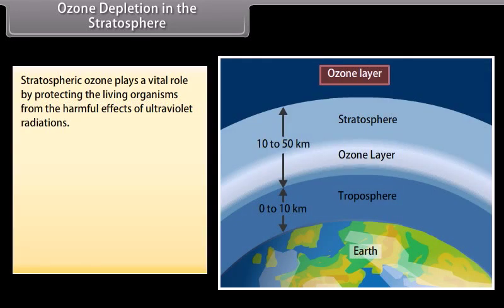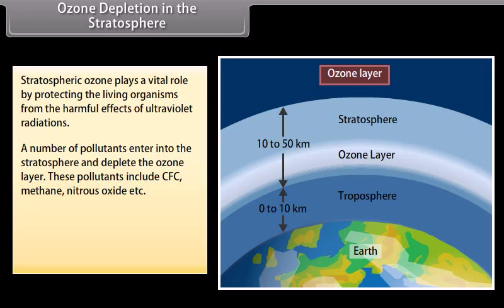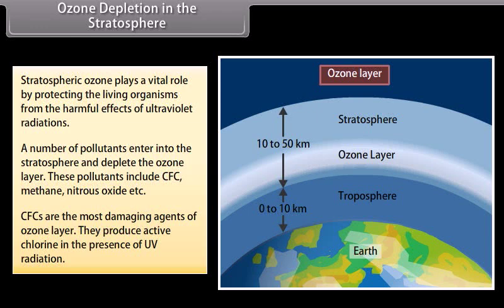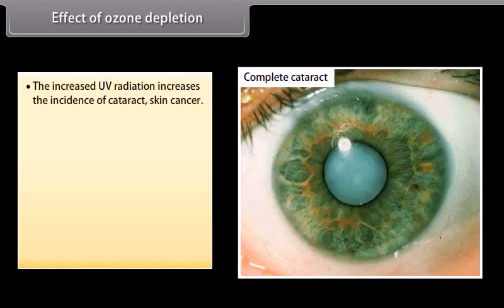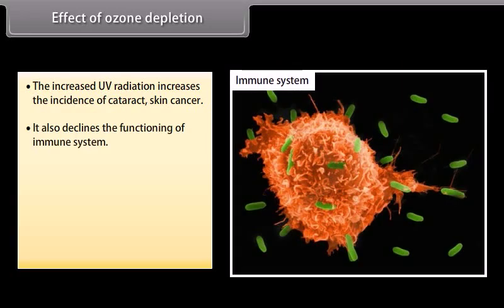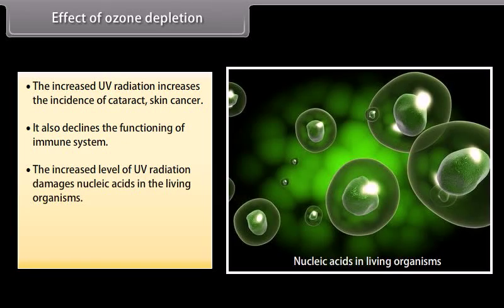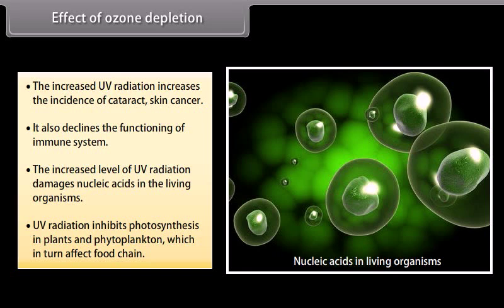Ozone Depletion: stratospheric ozone plays a vital role in protecting living organisms from the harmful effects of ultraviolet radiation. Pollutants such as CFCs, methane, and nitrous oxide enter the stratosphere and deplete the ozone layer. CFCs are the most damaging agents of the ozone layer — they produce active chlorine in the presence of UV radiation. Effects of ozone depletion include increased incidence of cataract and skin cancer, declined immune system functioning, damaged nucleic acids in living organisms, and inhibited photosynthesis in plants and phytoplankton, which in turn affects the food chain.